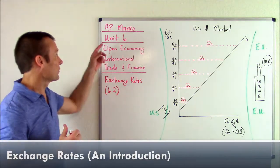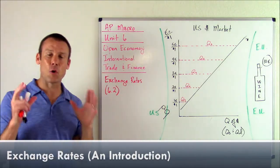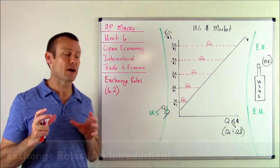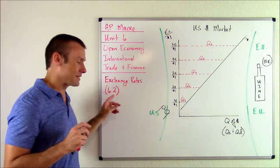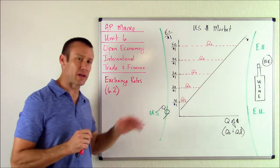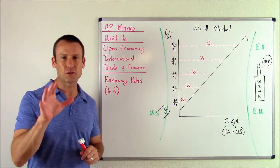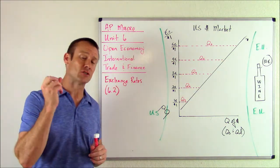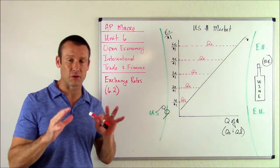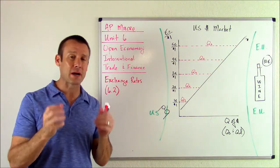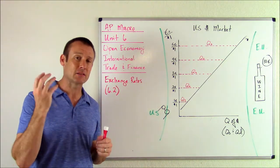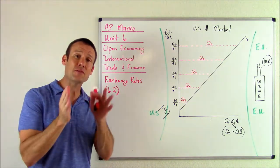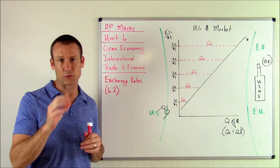Hey, this is AP Macro, this is Unit 6, the Open Economy — International Trade and Finance. We've got Sub Unit 6.2, Exchange Rates. The first thing I want you to know about an exchange rate is it's just a price. All an exchange rate is, is a price — it's the price of a currency in terms of another currency.